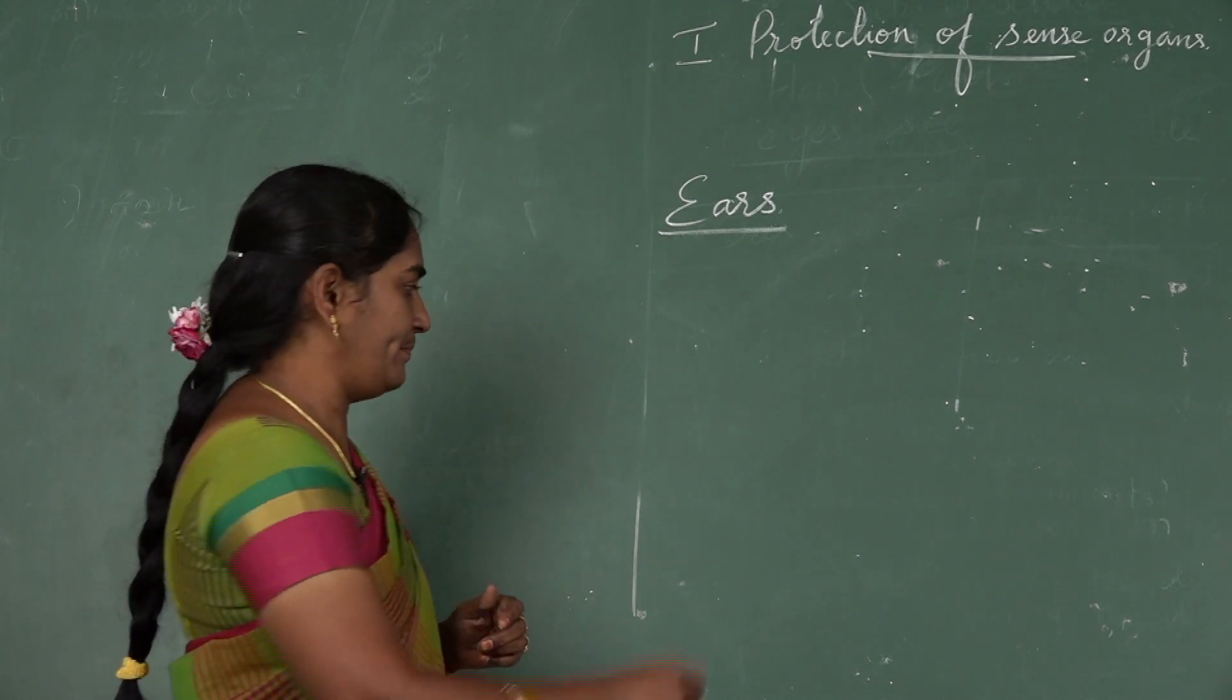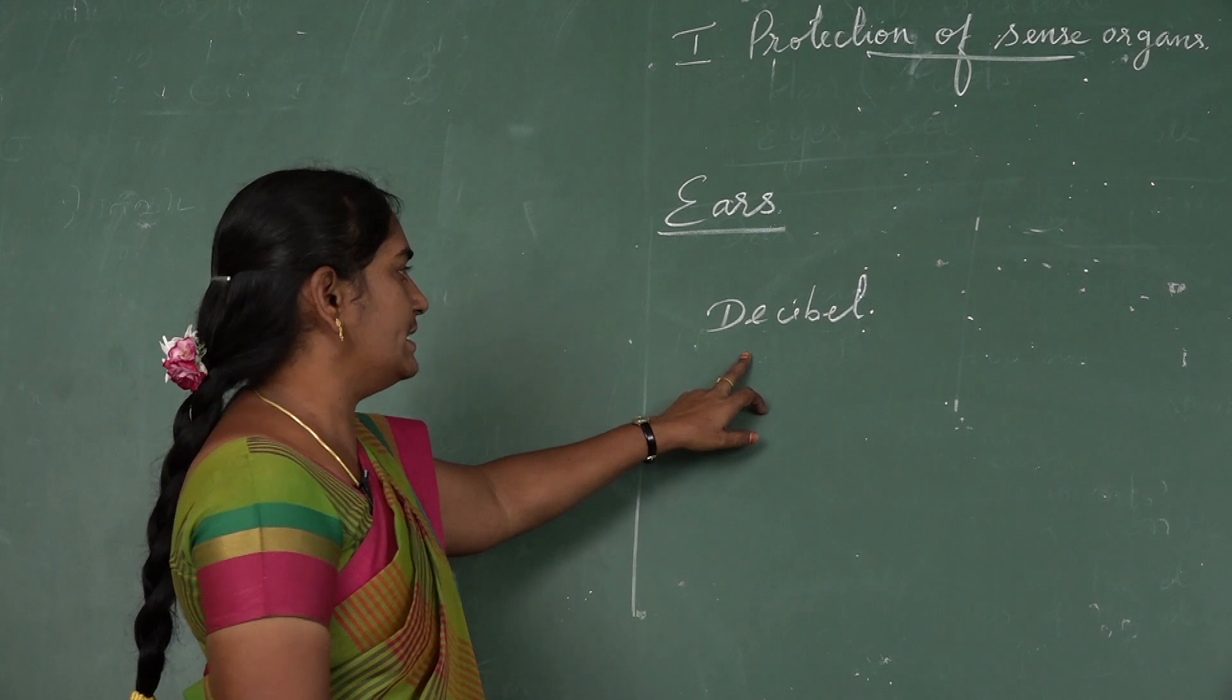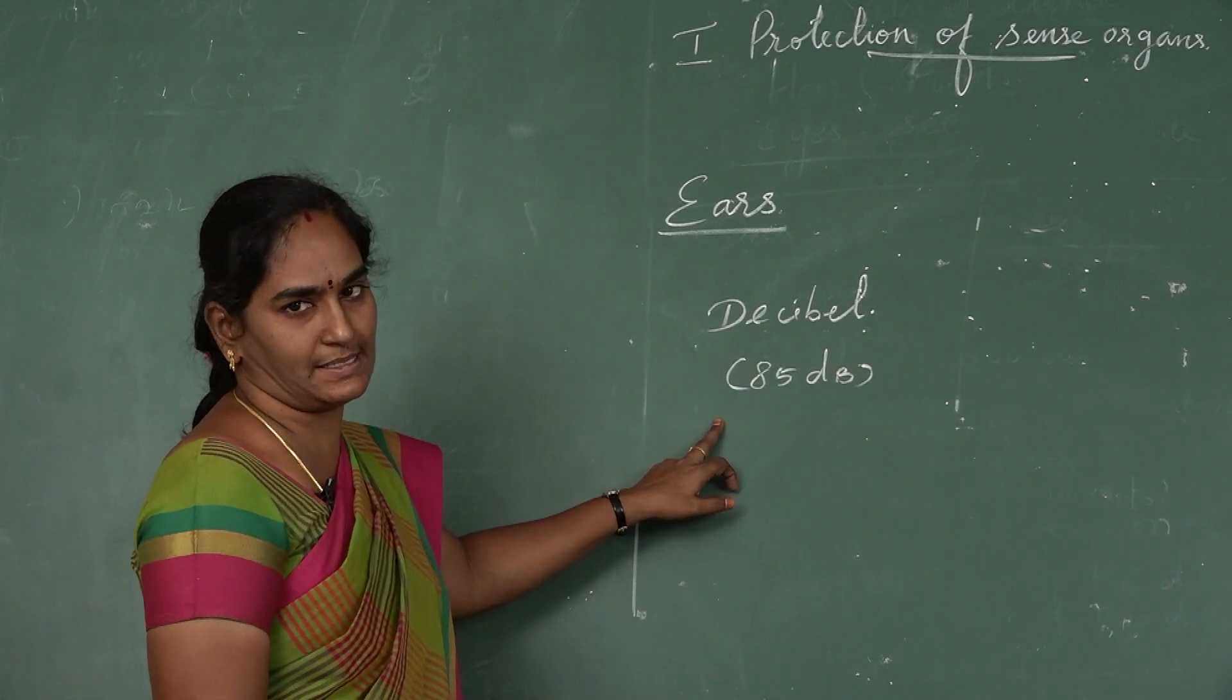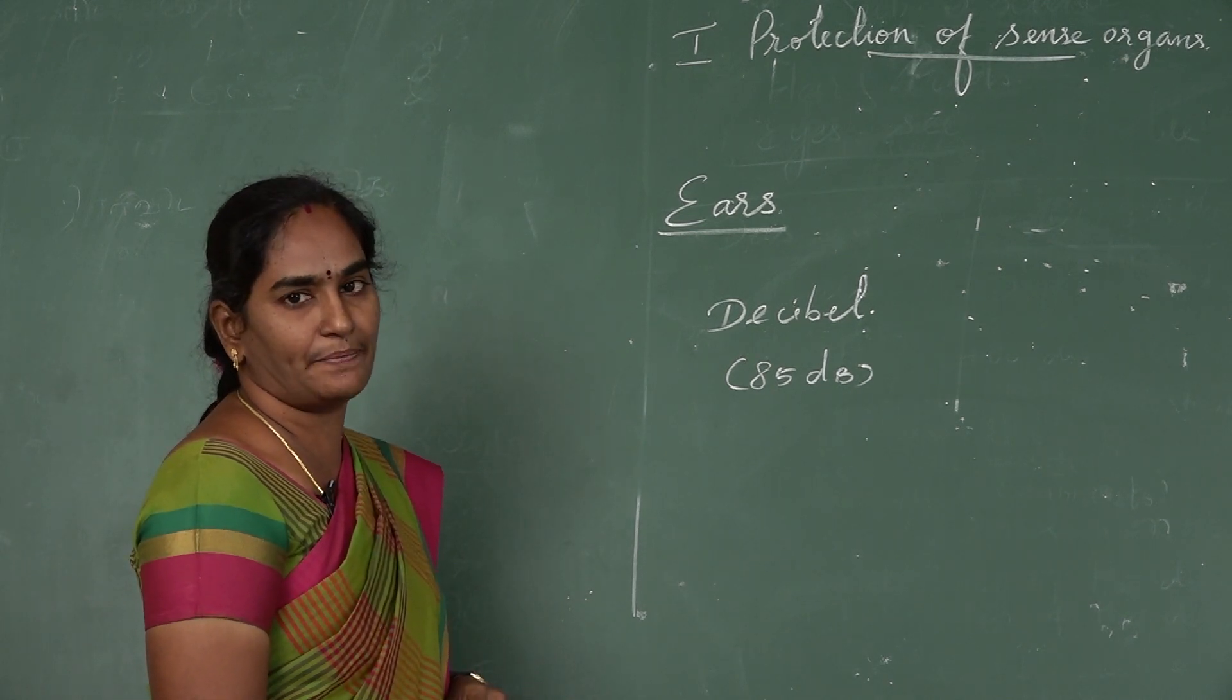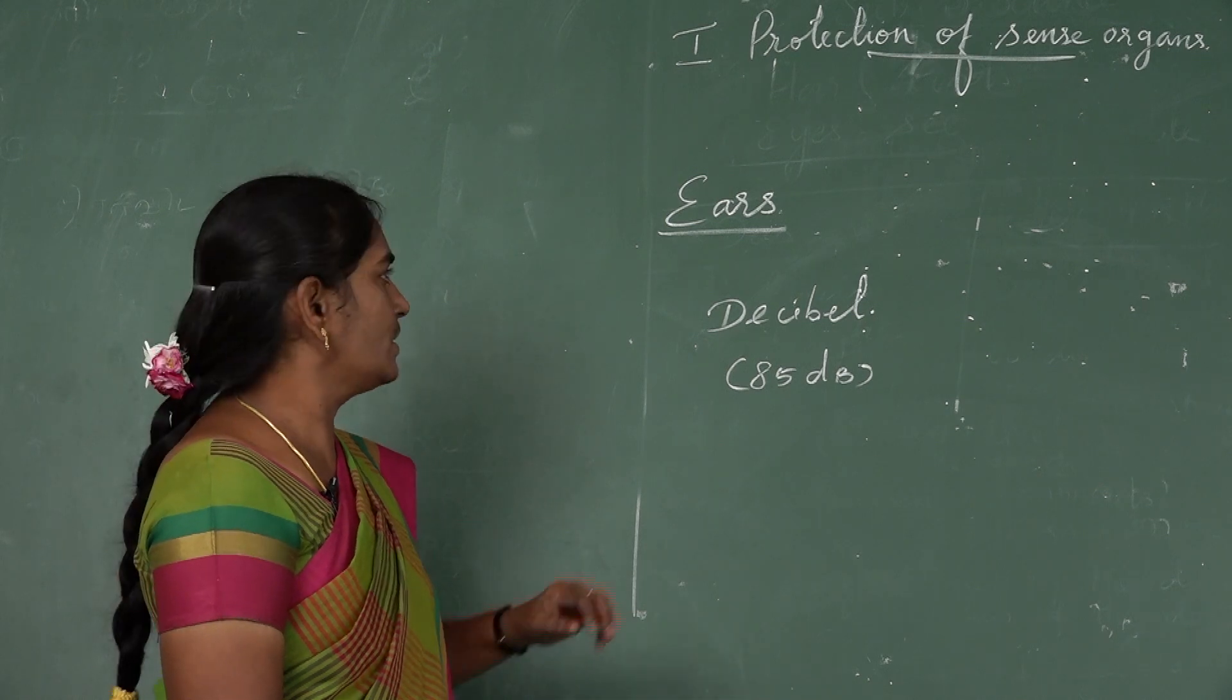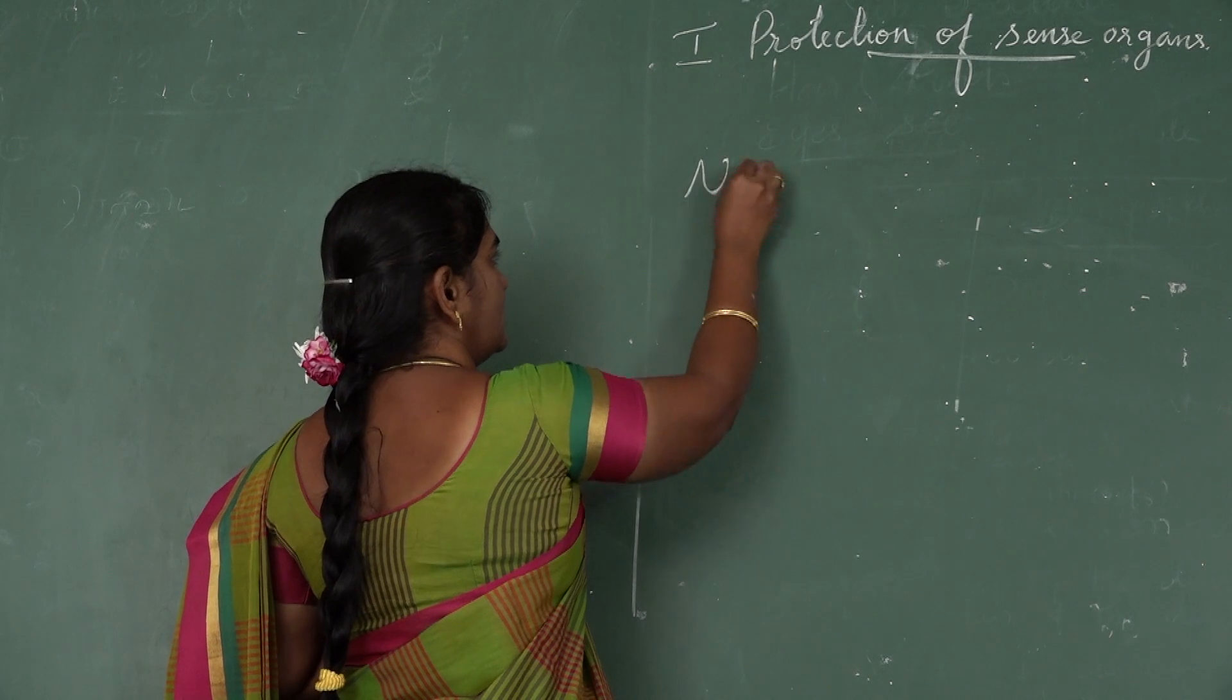Noise levels are measured in decibels. Any sound over 85 decibels is harmful to us. Hearing loss cannot be prevented always, but hearing loss due to exposure to loud noise can be avoided. So likewise you can protect your ears.